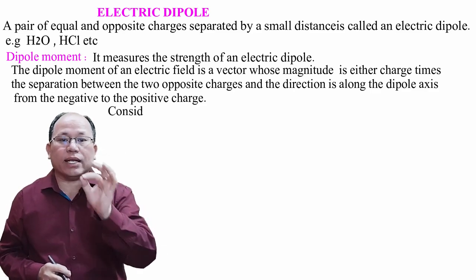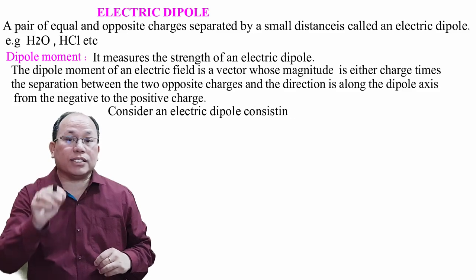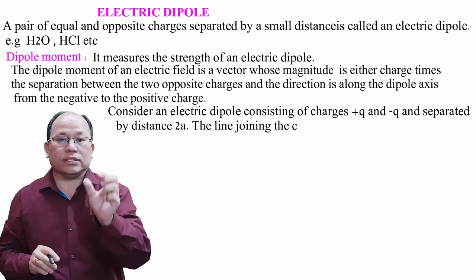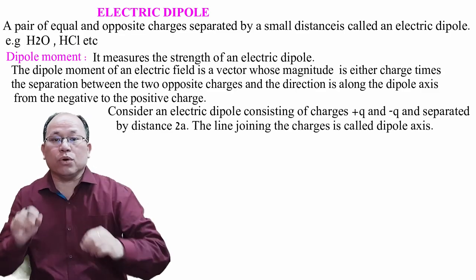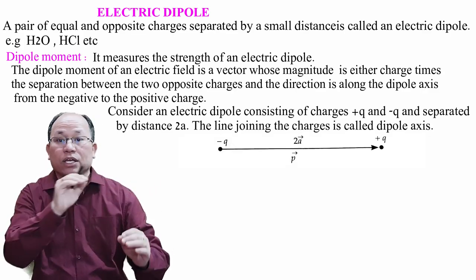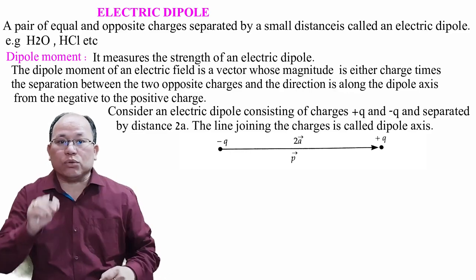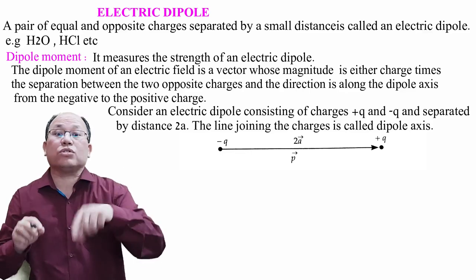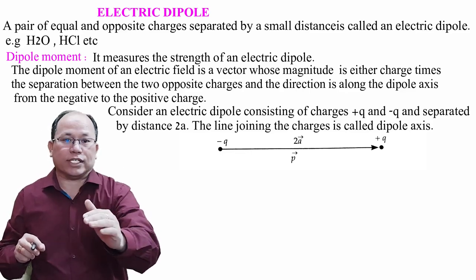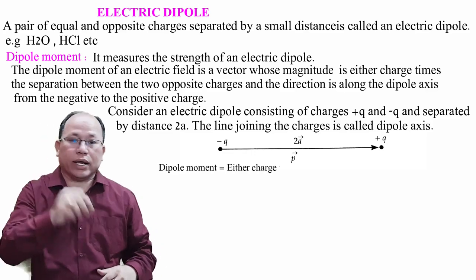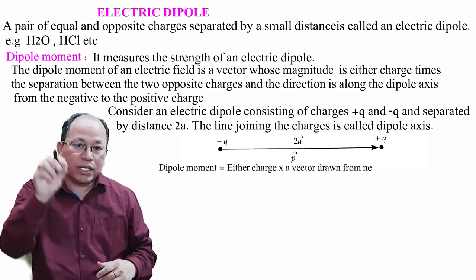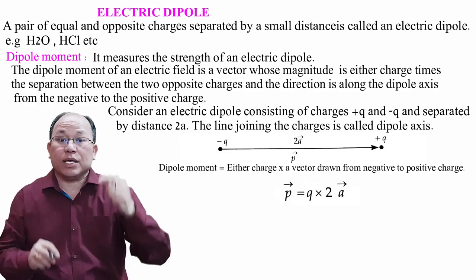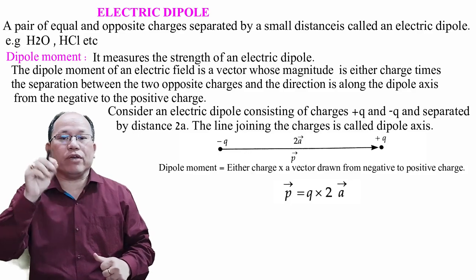Consider an electric dipole consisting of charges +q and −q separated by a distance 2a. The line joining the two charges is called the dipole axis. The dipole moment vector is drawn from the negative charge to the positive charge along this axis. So p vector = q × 2a vector, directed from −q to +q.